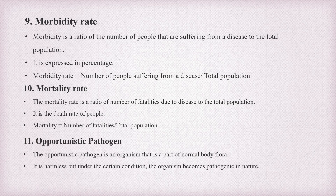The eleventh concept is opportunistic pathogen. An opportunistic pathogen is an organism that is part of the normal body flora and is harmless under normal conditions, but under certain conditions the organism becomes pathogenic in nature and causes disease.